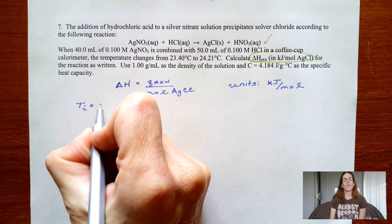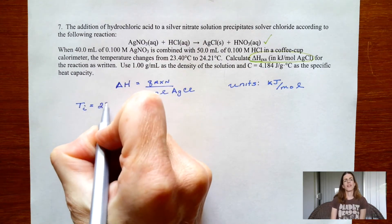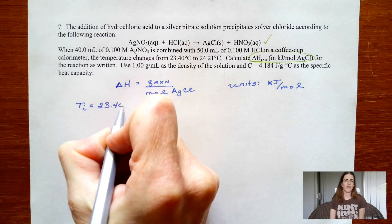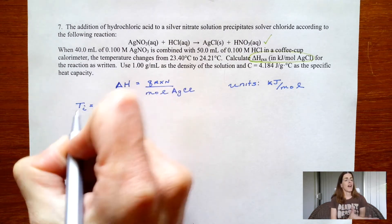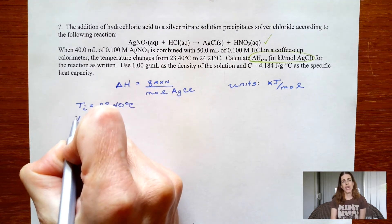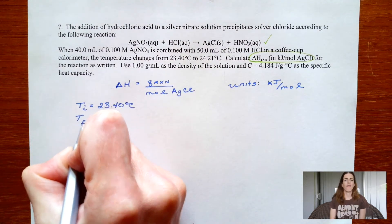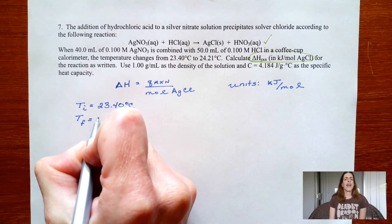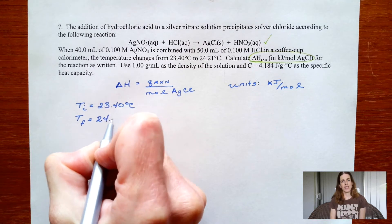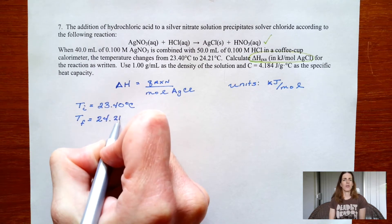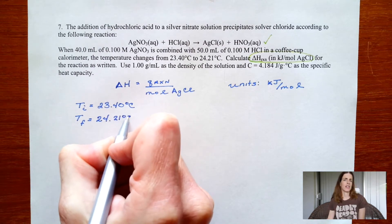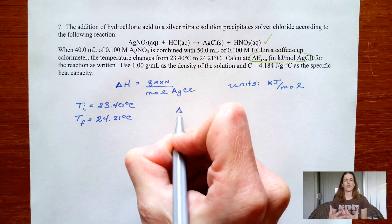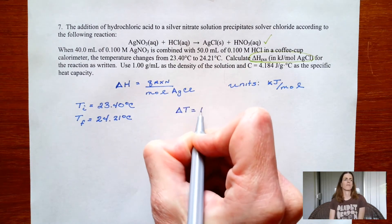Here I'm starting to organize the other information they give us. I write down the initial temperature and the final temperature, and since Delta T equals T-final minus T-initial, I can use those values to solve for my change in temperature.